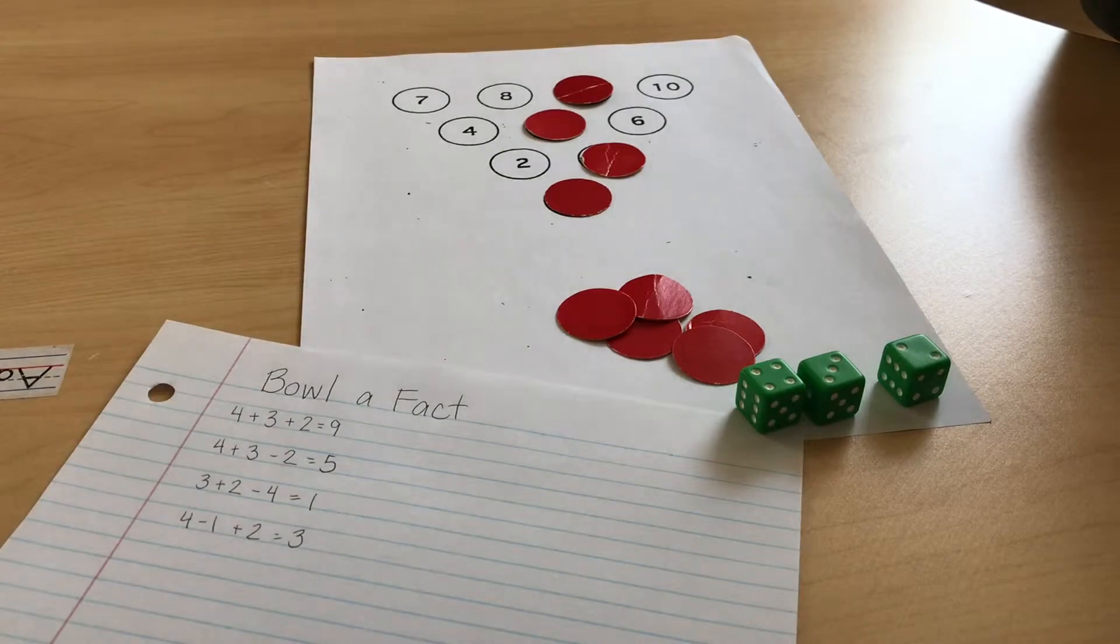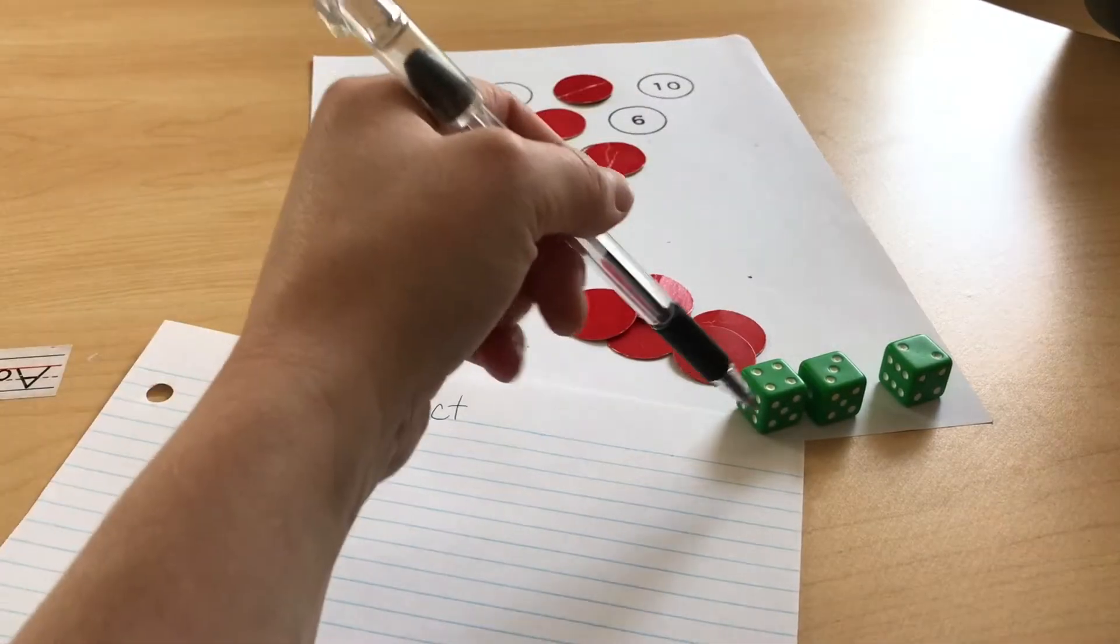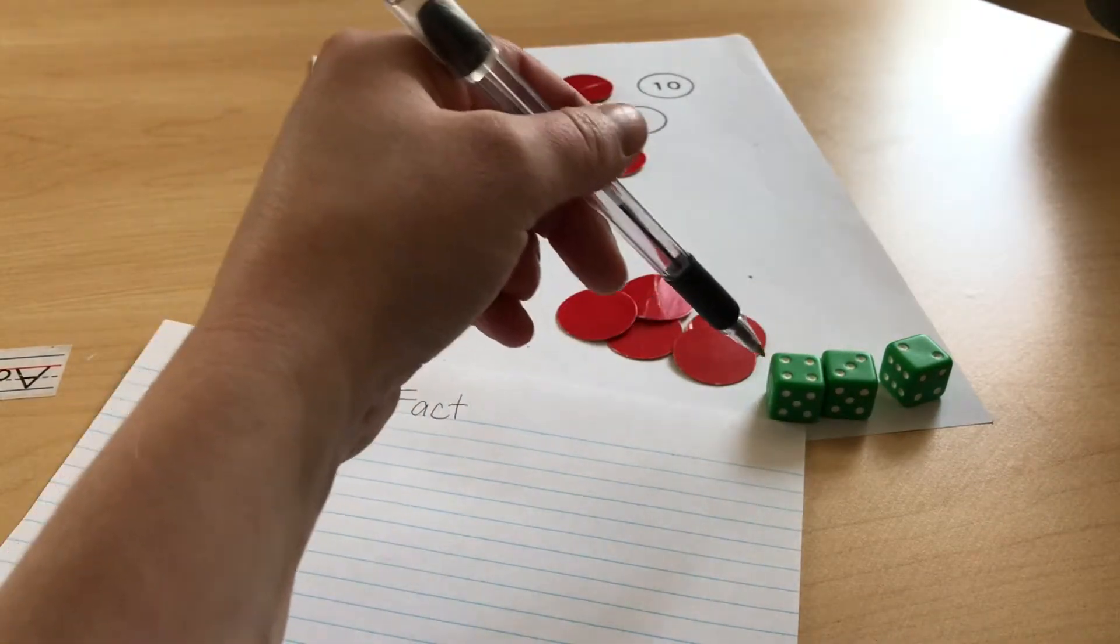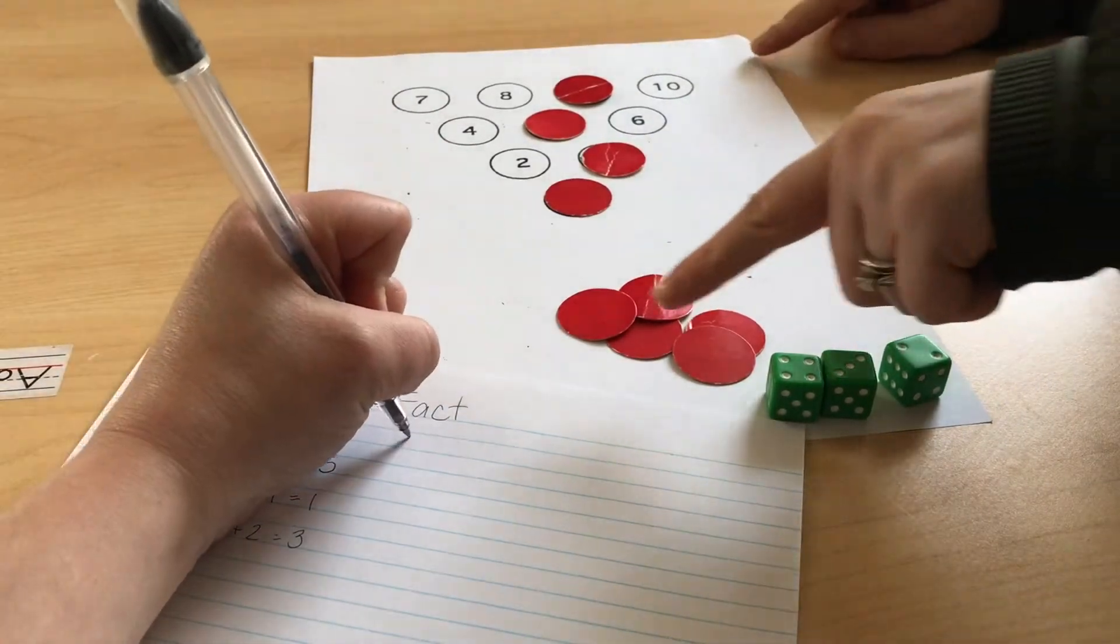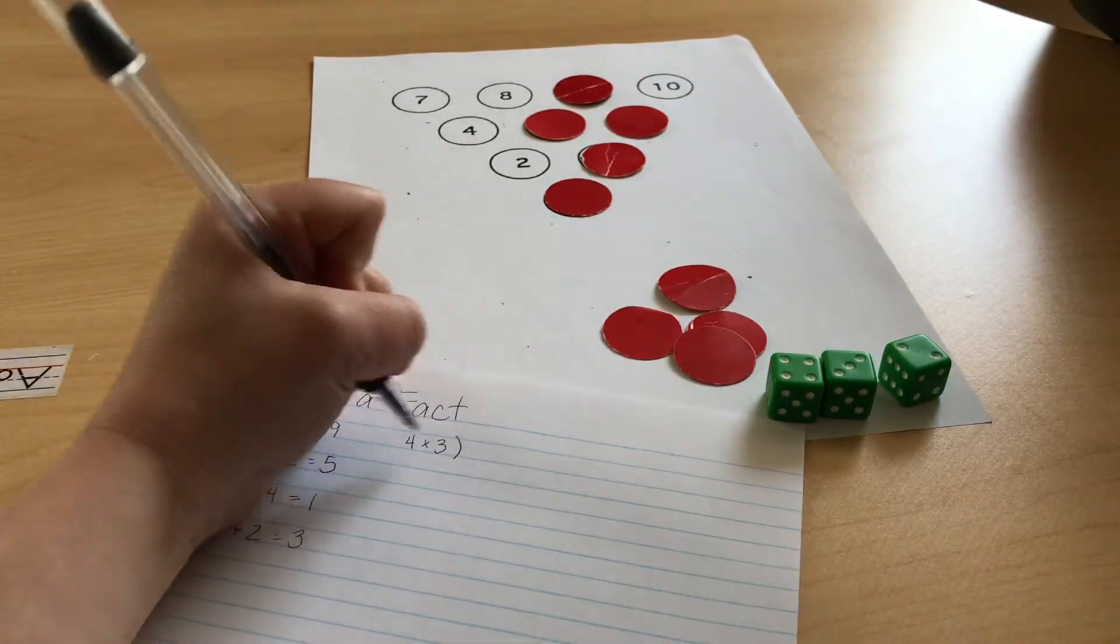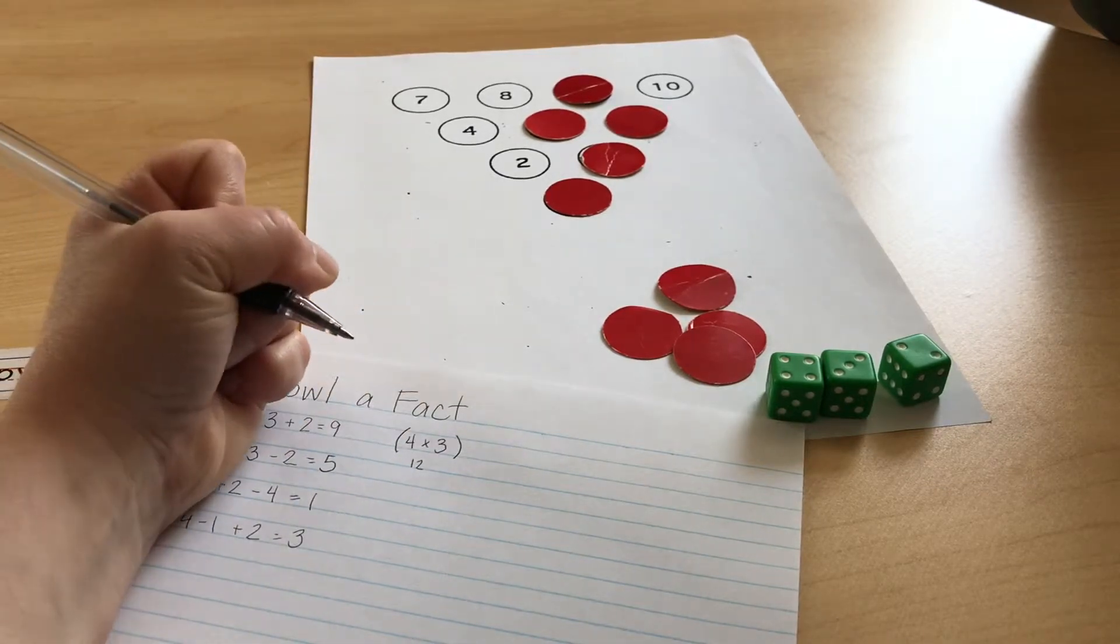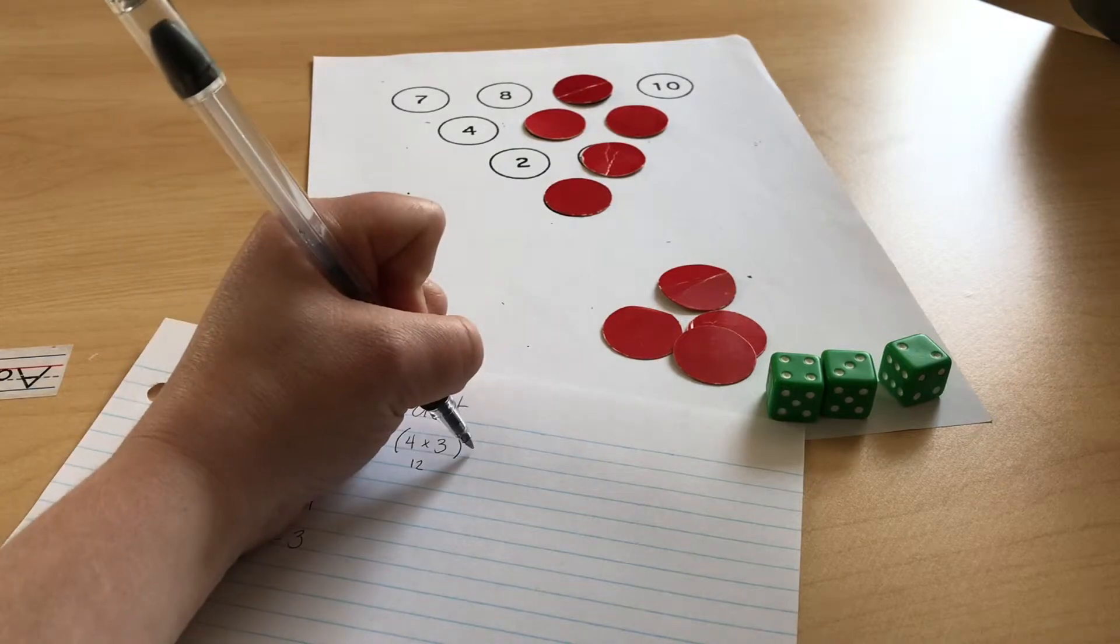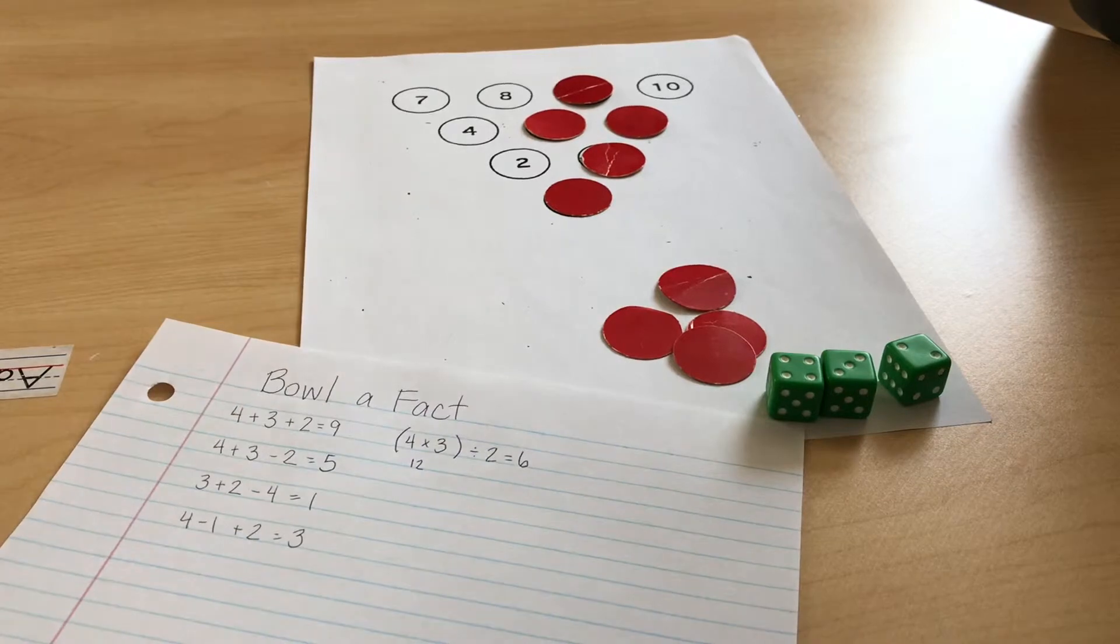For younger students, you'd want to keep playing this way. But for older students, we're also going to use multiplication and division to find other answers. When I'm looking here, I see that four times three is 12, and 12 divided by two is six. I'm going to write it down. I want to show that I used those numbers together, so I'm just going to put those in brackets. Four times three is 12, and then I divided it by two to give me that six answer.